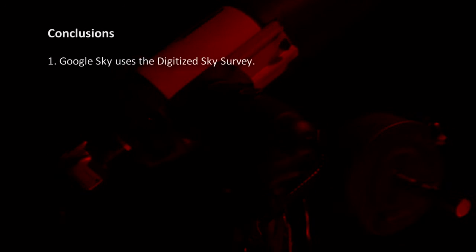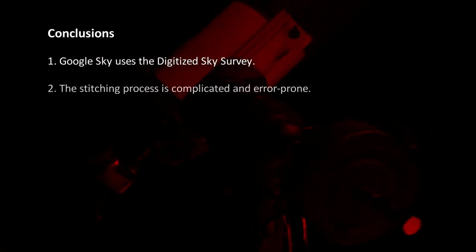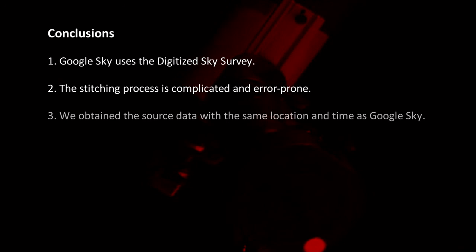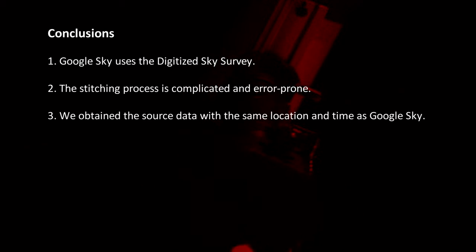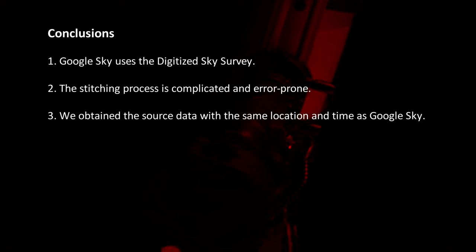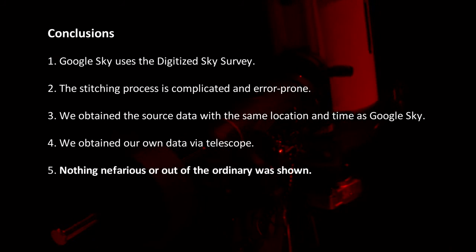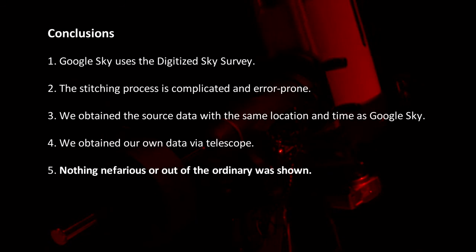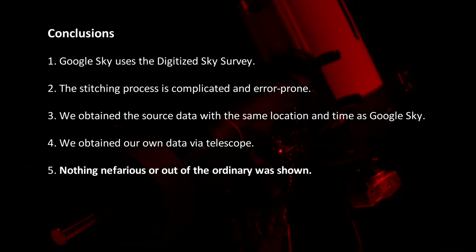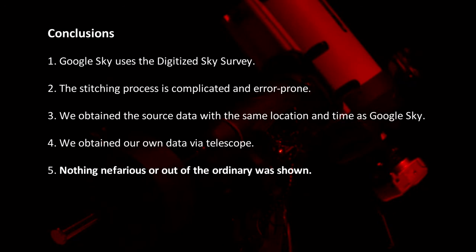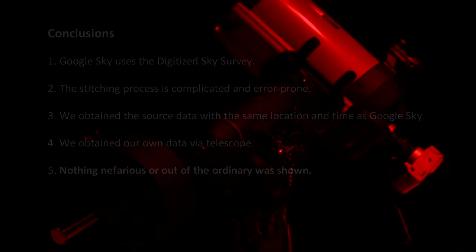To recap: Google Sky uses the Digitized Sky Survey for their data source. We know the stitching process is complicated and error-prone. We independently obtained the source data with the same location and time as Google Sky. We then obtained our own data via telescope. In all cases, nothing nefarious or out of the ordinary was shown. The Google Sky blank spot is a glitch in the software, not a cover-up or conspiracy to hide Nibiru or the truth. Be sure to try the methods outlined in this video yourself — you can apply these techniques to any blank spot in Google Sky.